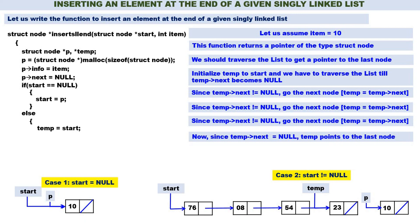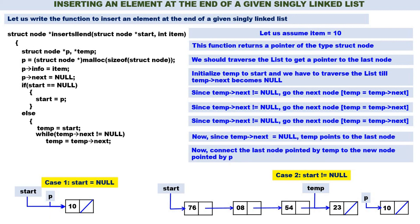We have got a pointer to the last node. In the function, we write: while (temp->next != null), temp = temp->next. When temp->next equals null, we come out of the while loop. Temp is now containing the address of the last node. We connect it to the new node: temp->next = P.